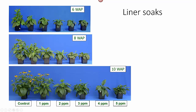What about the liner soaks? Again, these pictures are one week older than those you saw with the substrate drenches or the spray. At 0, 1, 2, 3, 4, or 5 parts per million for a two-minute liner soak, you can see they were very strongly affected by the Concise treatment. This held all the way through ten weeks after planting. When the control plants and the one part per million plants were fully flowered, those treated with two parts per million flowered about the same time as the controls, but there was a delay in those treated with higher rates.